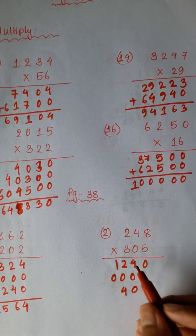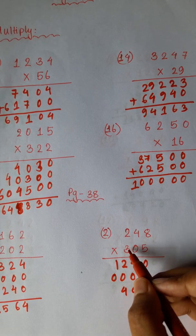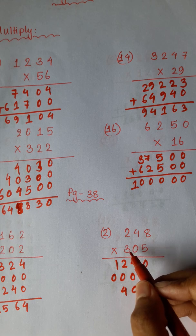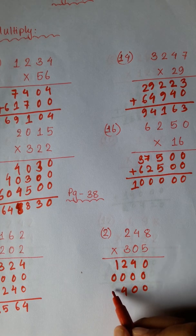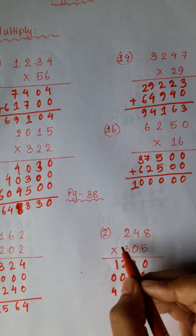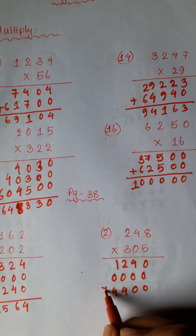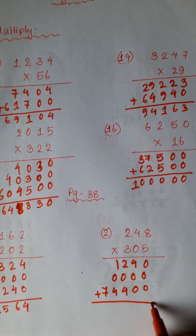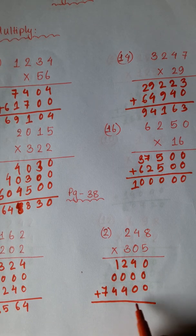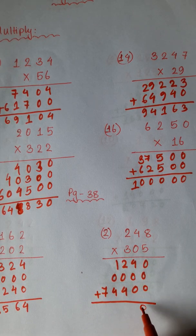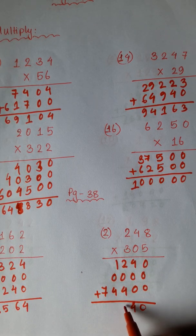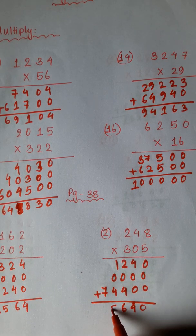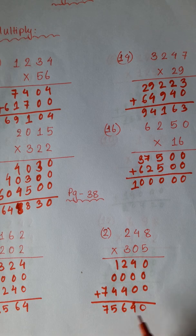2, 1, 3, 2. 14 carry 1. 3, 2, 0, 6 plus 1 is 7. 0, 4, 6, 5, 7.